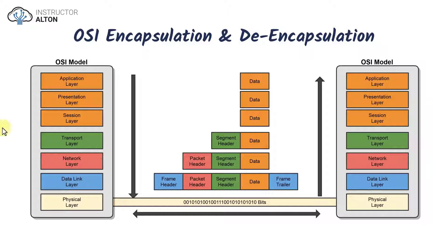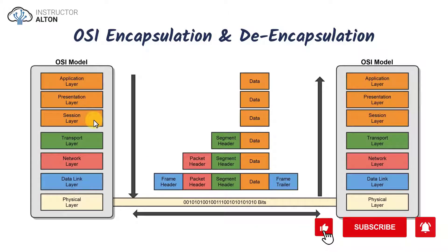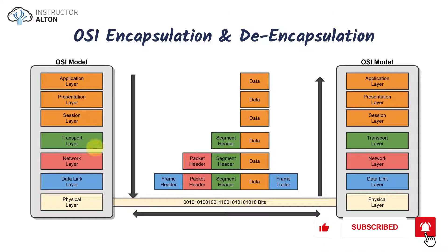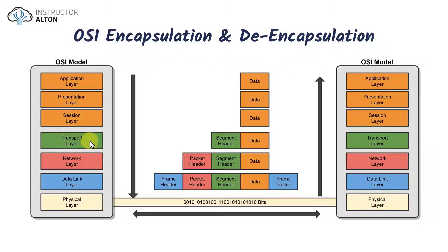In this simple example, we're going to assume that these are two directly connected computers connected with an ethernet crossover cable, depicted in a light yellowish color. The top three layers occur at the host and we simply call them data. Once we get down to the transport layer, the data is broken up into segments, and each segment gets a segment header — either a TCP or UDP header.